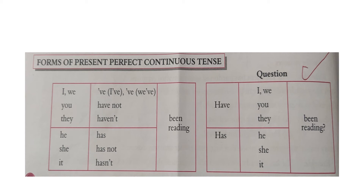Present perfect continuous tense is used to emphasize the continuity of an action that has begun in the present and is still going on at the time of speaking. For example: 'She has been reading since afternoon' — affirmative in present perfect continuous tense. 'They haven't been reading the poem for 15 minutes' — negative in present perfect continuous tense.